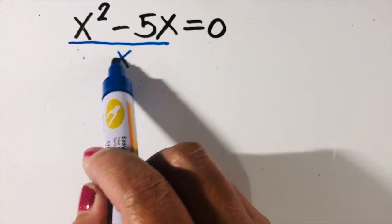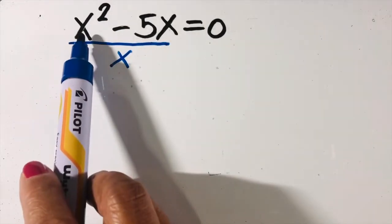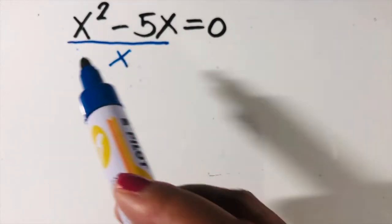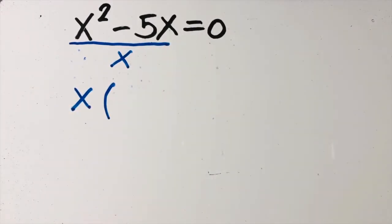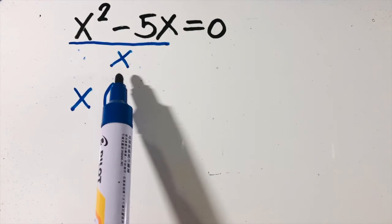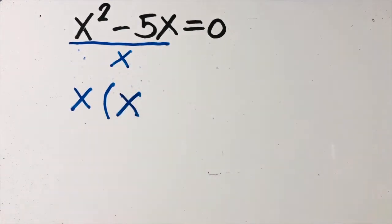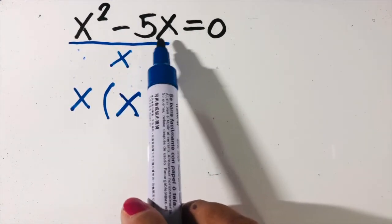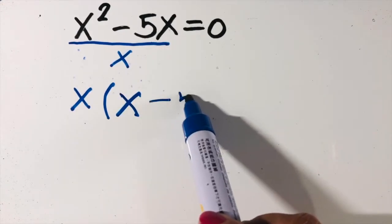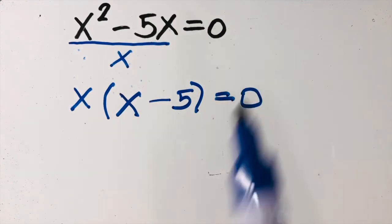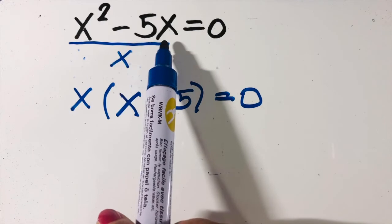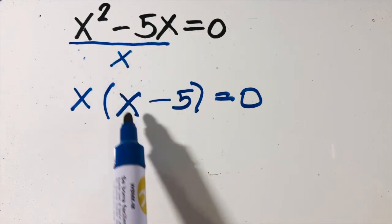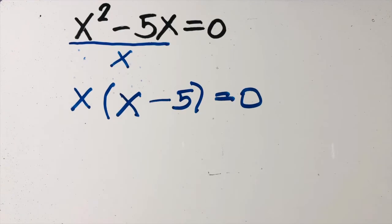We will use the greatest common factor rule. We divide both terms by x: x squared divided by x equals x, and 5x divided by x equals 5. So the factors of x squared minus 5x are x (the GCF) and the other factor x minus 5, set equal to zero.